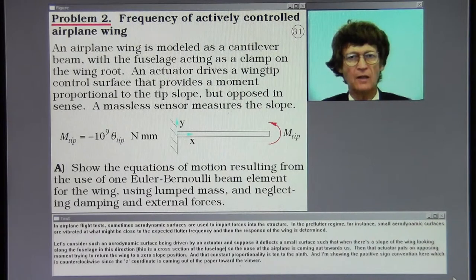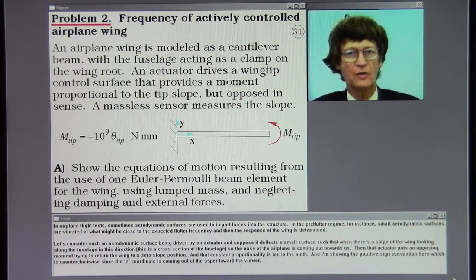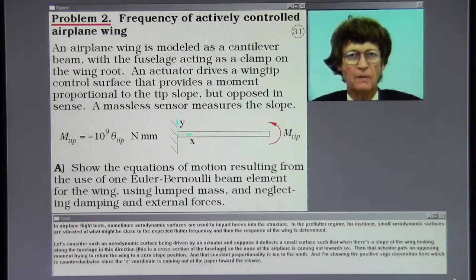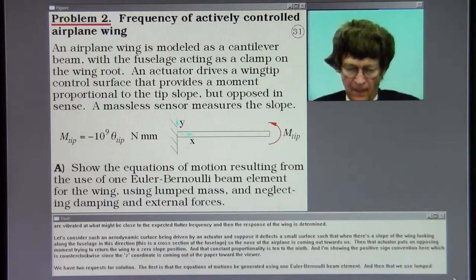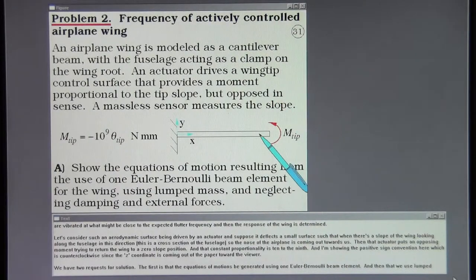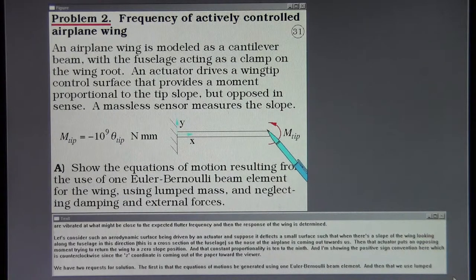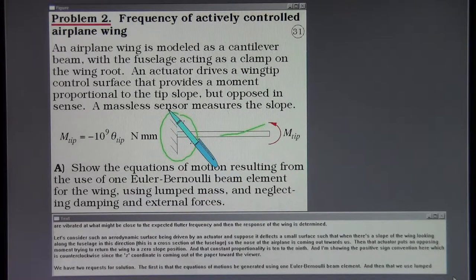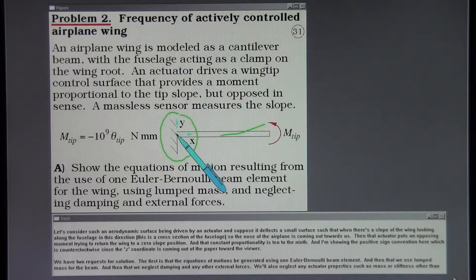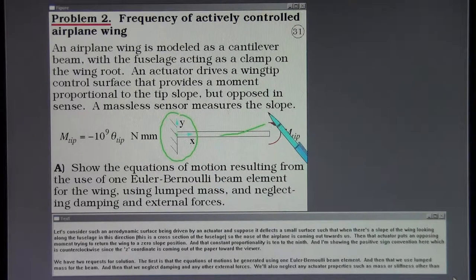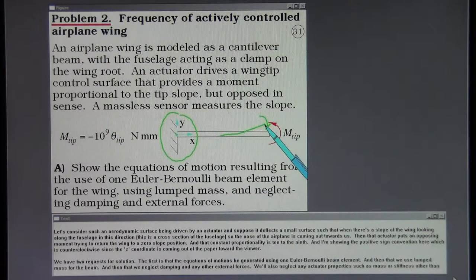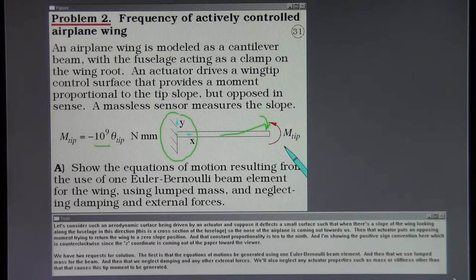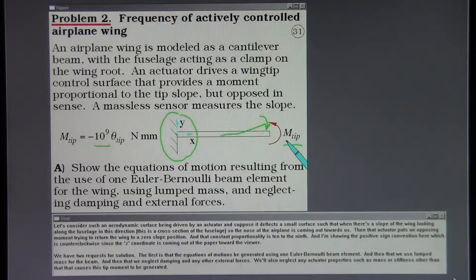In airplane flight tests sometimes aerodynamic surfaces are used to impart forces into the structure. In the pre-flutter regime, small aerodynamic surfaces are vibrated at what might be close to the expected flutter frequency and then the response of the wing is determined. Let's consider such an aerodynamic surface being driven by an actuator and suppose that it deflects a small surface such that when there is a slope of the wing looking along the fuselage in this direction—this is a cross section of the fuselage, so the nose of the airplane is coming out toward us—then that actuator puts an opposing moment trying to return the wing to a zero slope position. And that constant of proportionality is ten to the ninth. I'm showing the positive sign convention here which is counter-clockwise since the z coordinate is coming out of the paper toward the viewer.